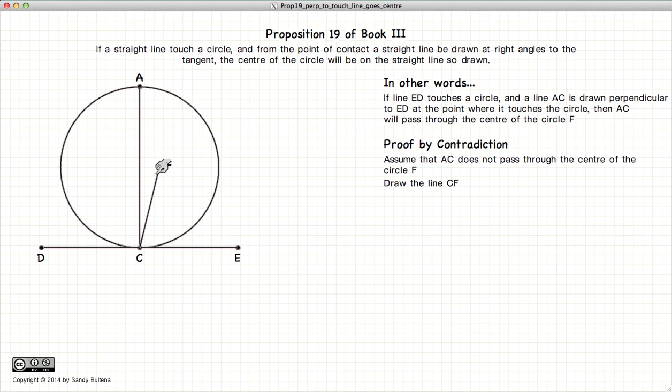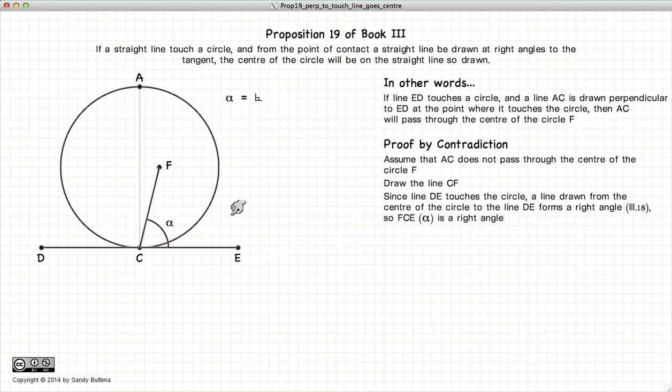So let us draw the line FC. Now, according to Proposition 18 of Book 3, if we have a line from the center of the circle to the point where another line touches the circle, then the angle between these two lines, alpha, has to be a right angle. Again by Proposition 18 of Book 3, so alpha is a right angle.